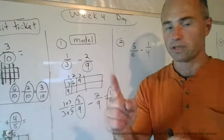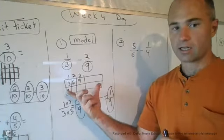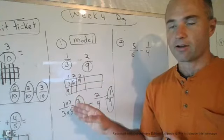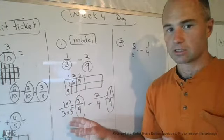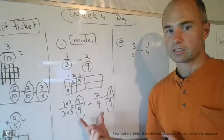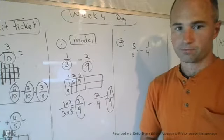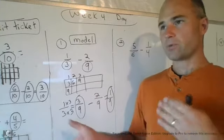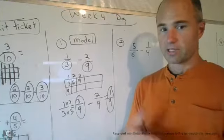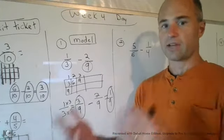Step one, find common denominator. Step two, make an equivalent fraction. Step three, subtract. It's the same steps we did for addition, but now the only difference is we're subtracting instead of adding.